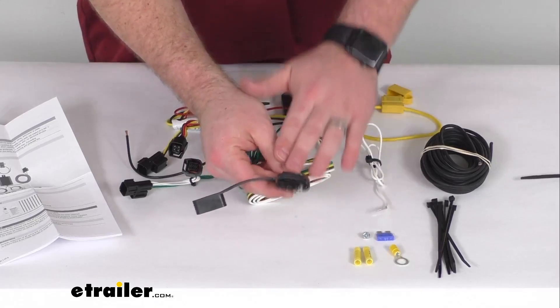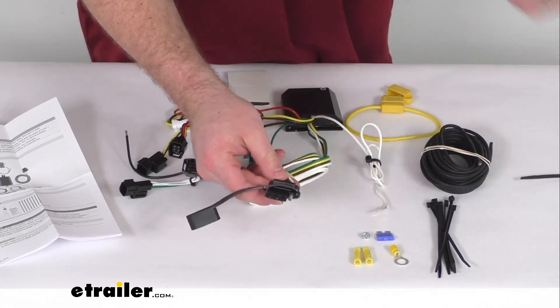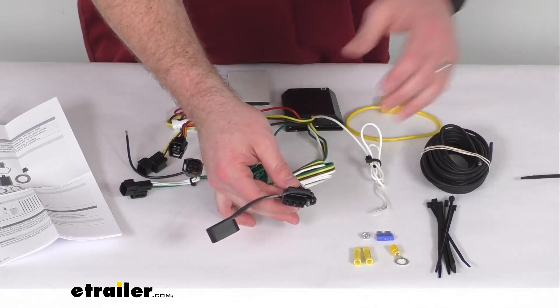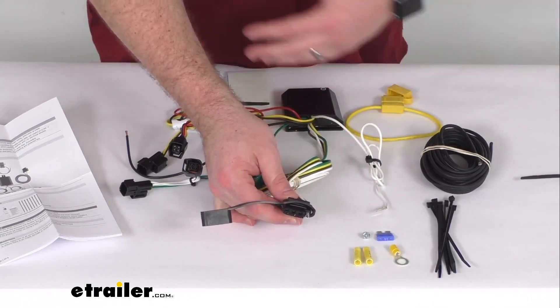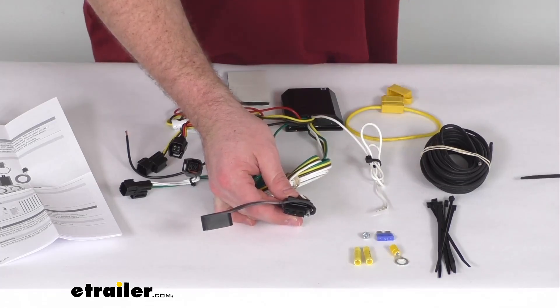This is going to provide a 4-Way Flat Trailer Connector at the back of your vehicle so you can power up your trailer's signal lights. That way other motorists can tell if you're stopping or turning or driving at night.